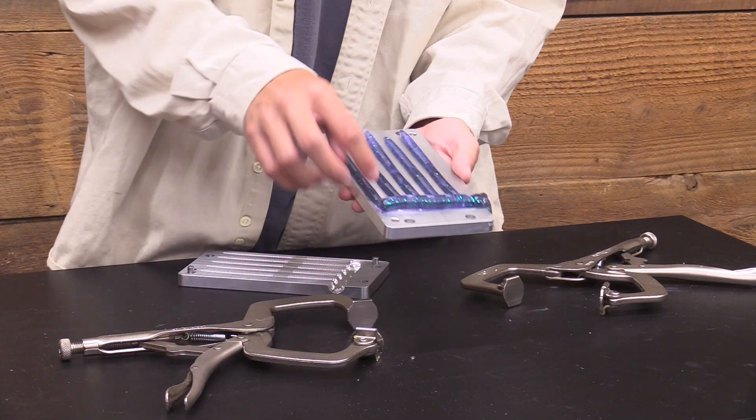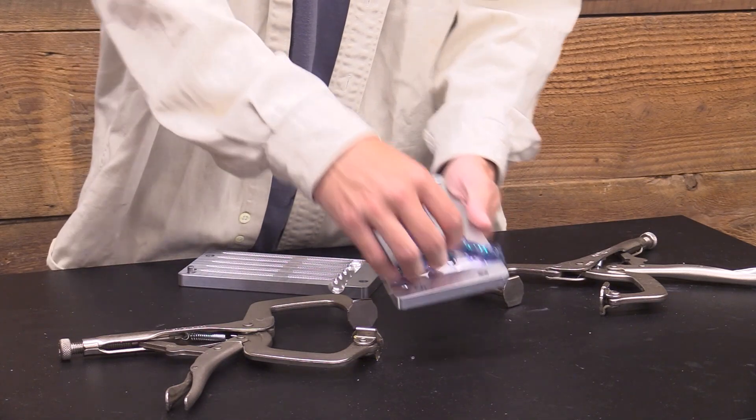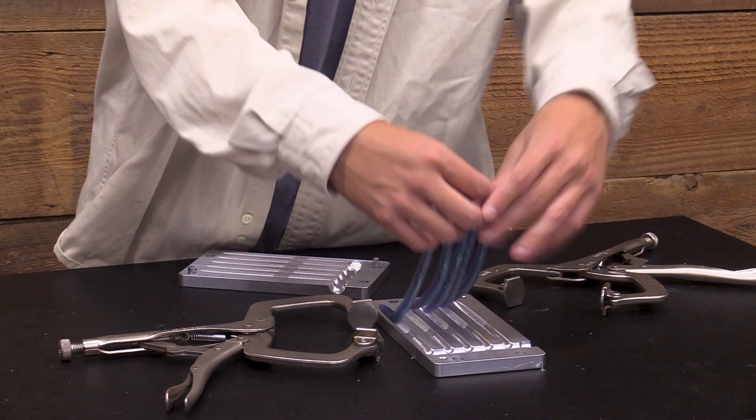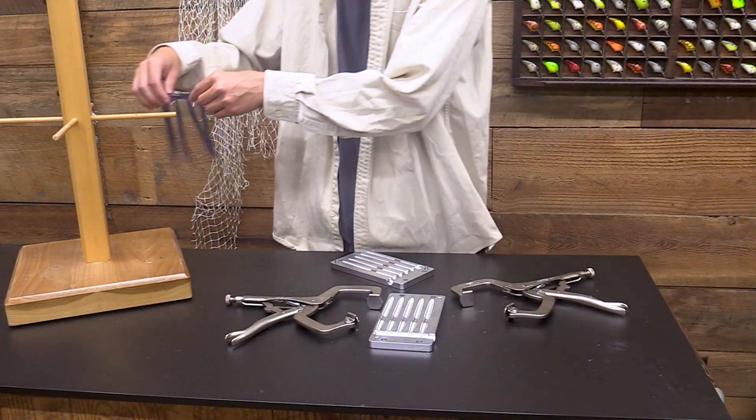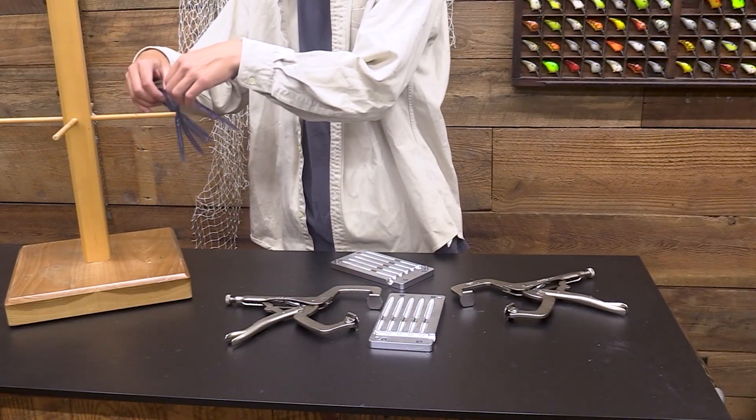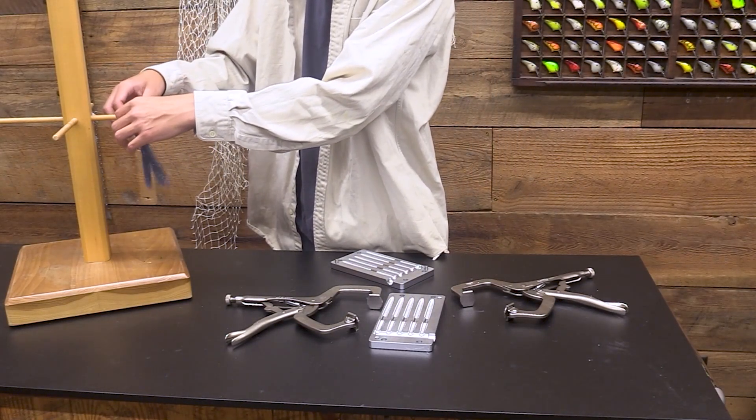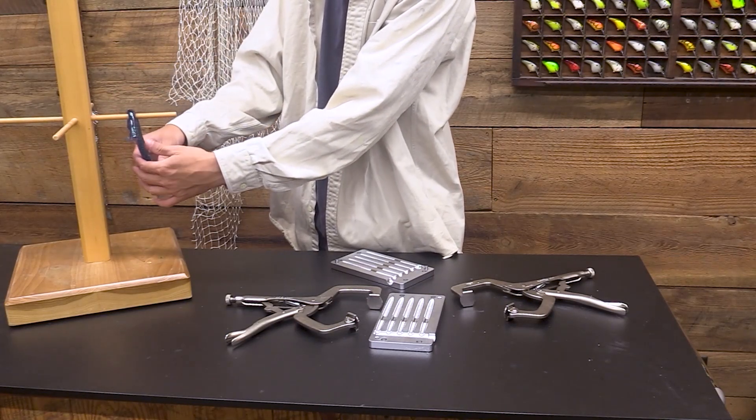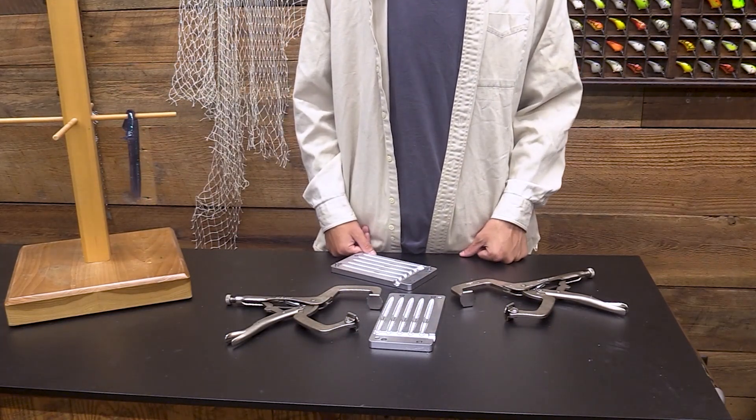Now I've got five stick baits that you can use to go catch some fish. Before we use them we're going to hang them up and let them dry. What this does is lets them cure a little bit better. Let them cure for about a day and you should be good to go.